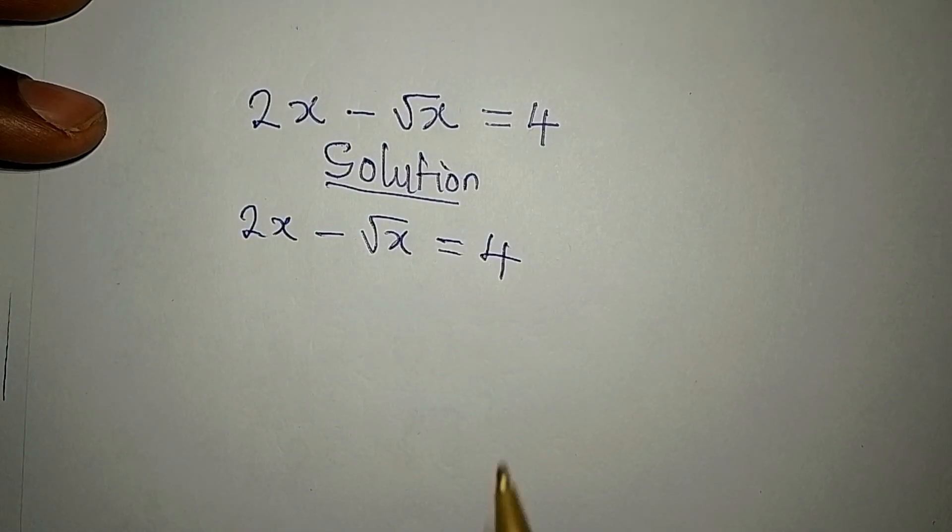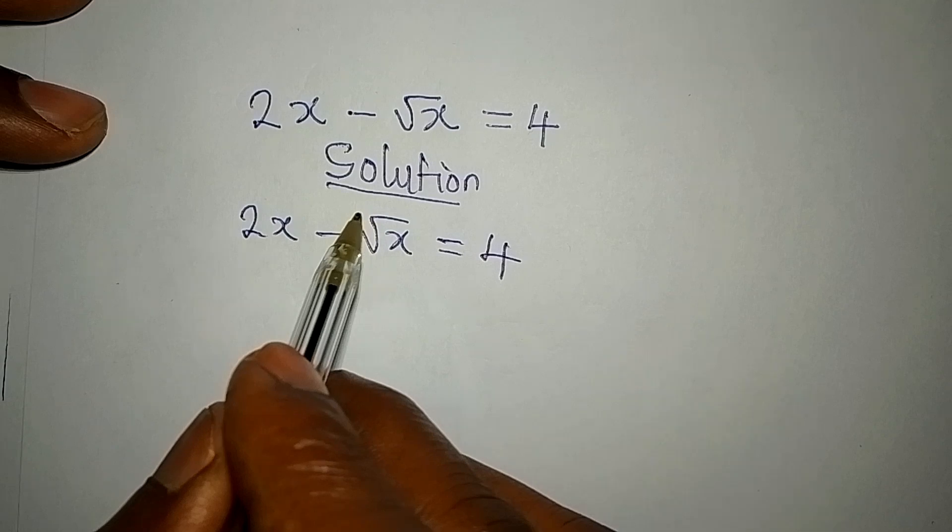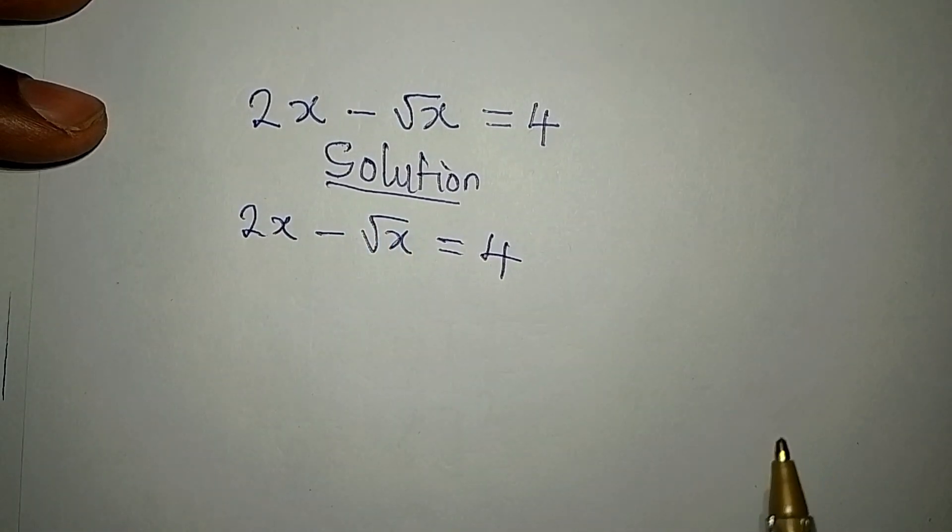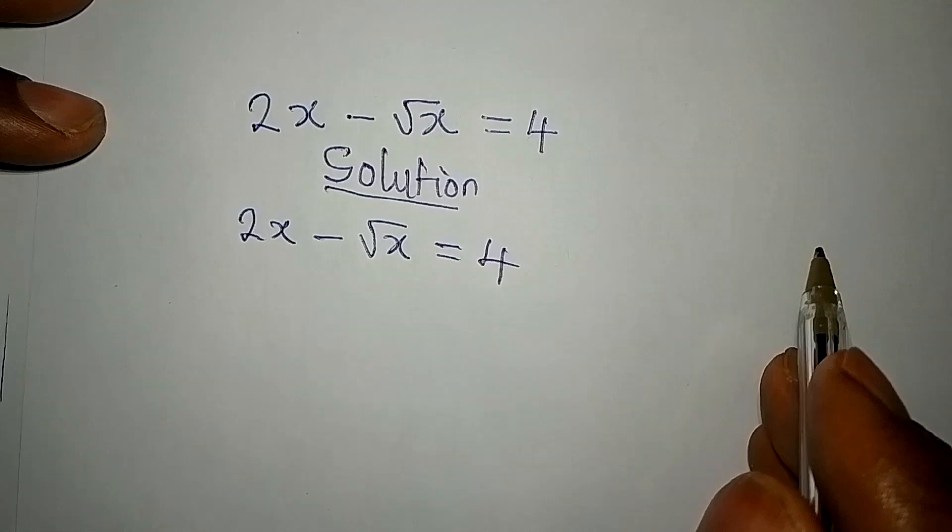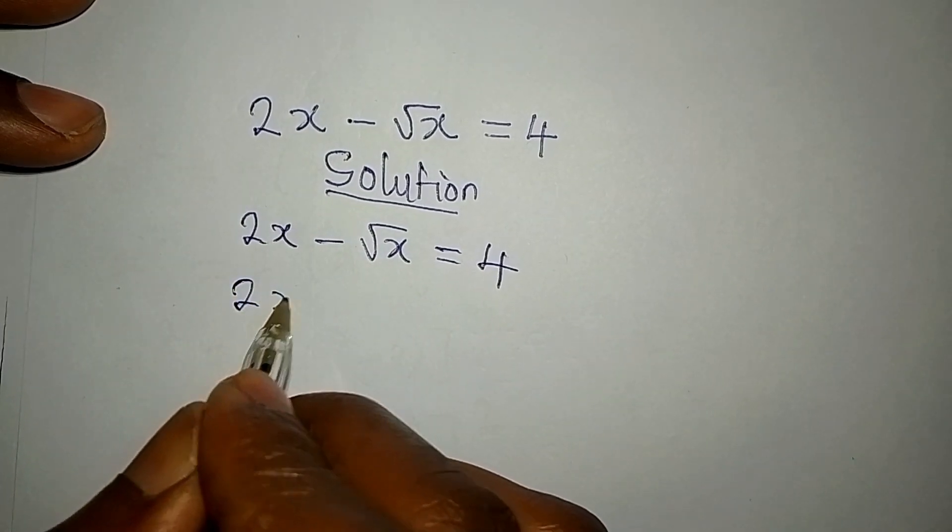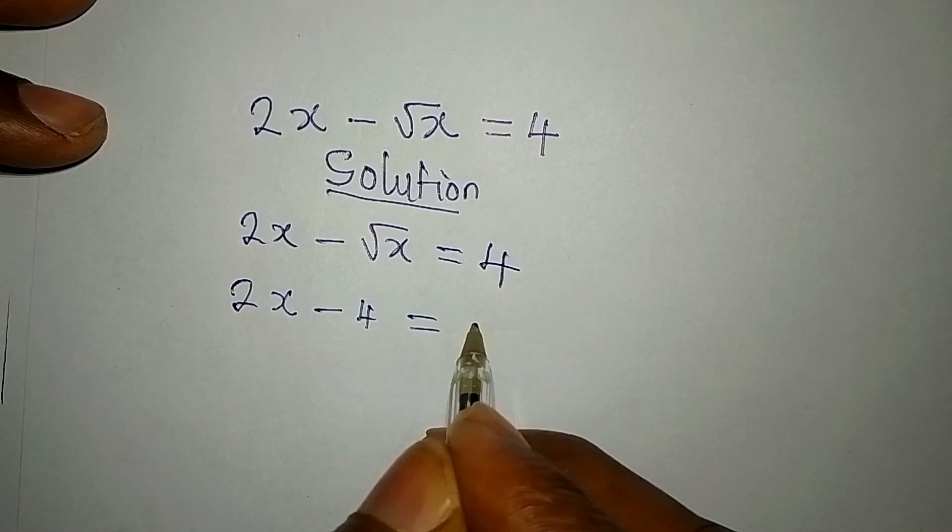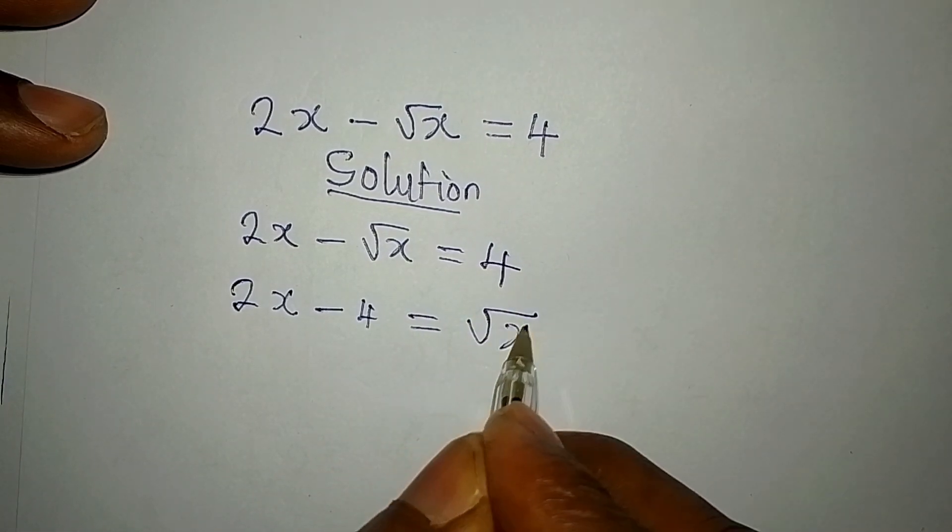Now what do I do? I want to remove this from here, so that will be my target. I can just take this to the other side and bring 4 here. So we have 2x minus 4 equals square root of x.